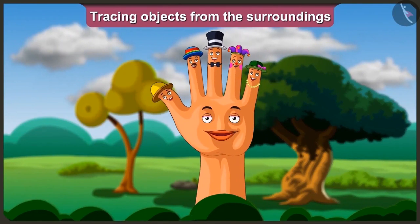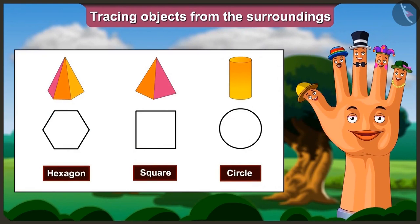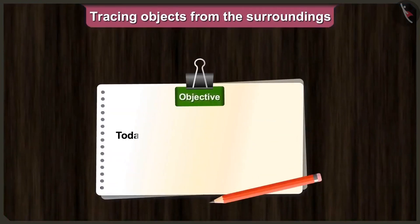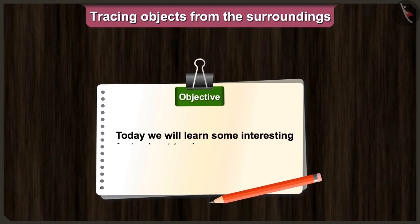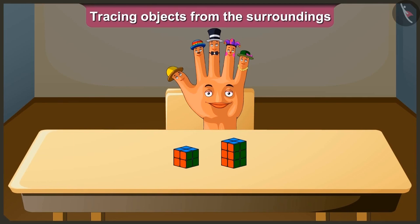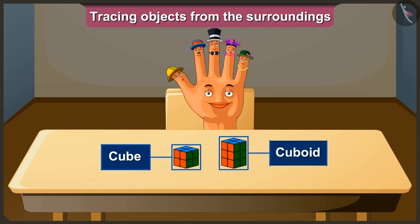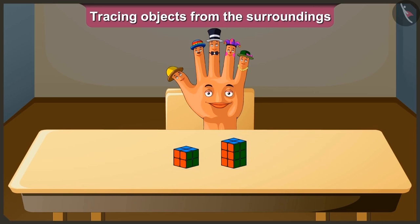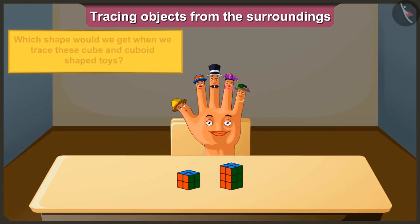Friends, in the last video, you understood the shapes we get when we trace objects from the surroundings. Today, we will understand some interesting facts related to tracing objects. Hey Tallman, look — this is a cube-shaped toy and this is a cuboid-shaped toy. Now tell me, which shape would we get when we trace these cube and cuboid-shaped toys?